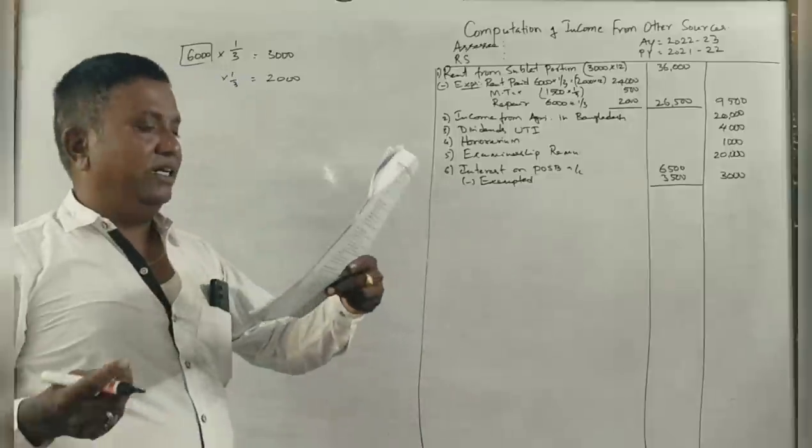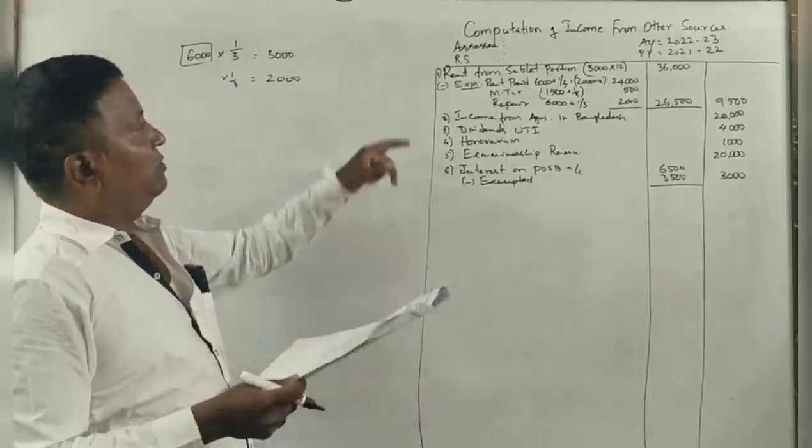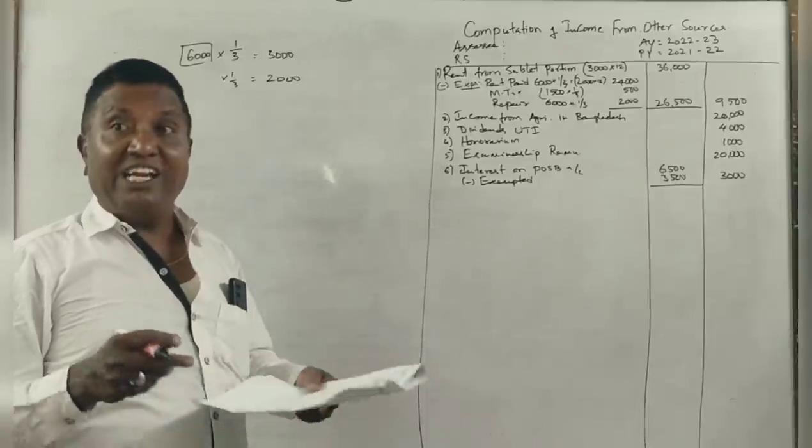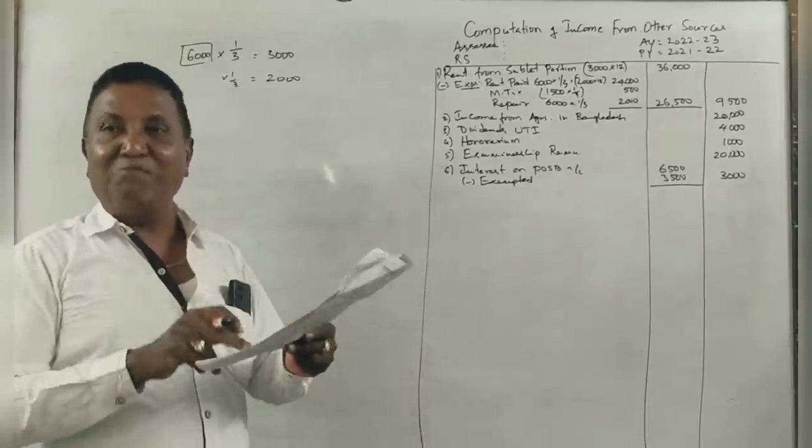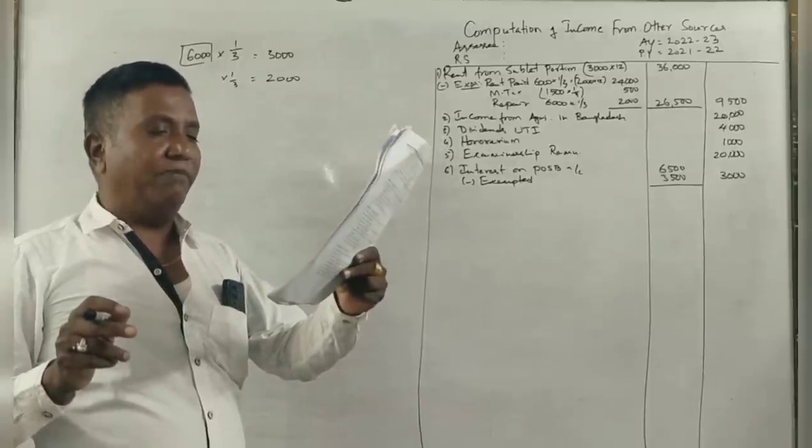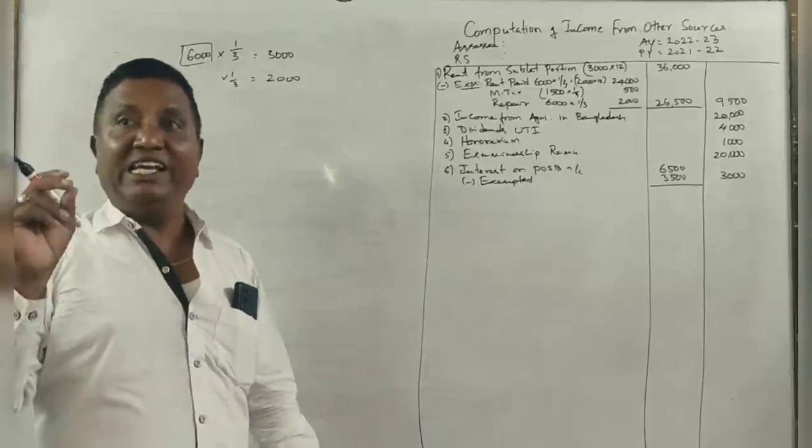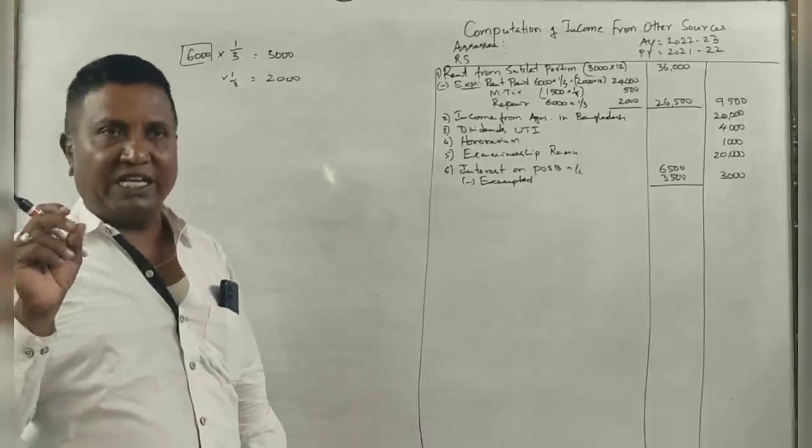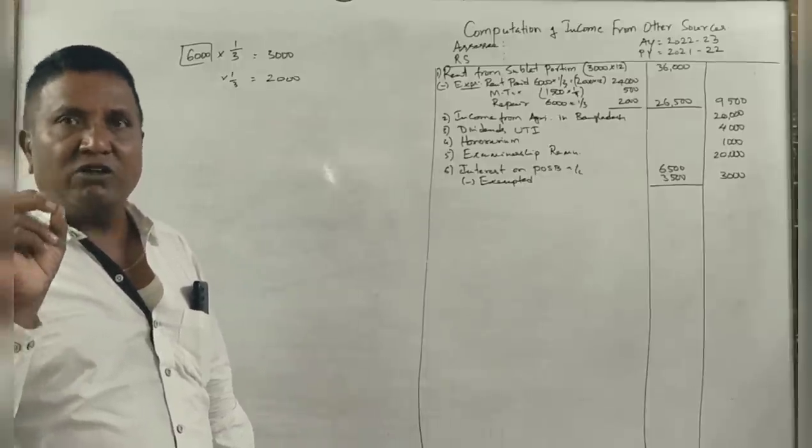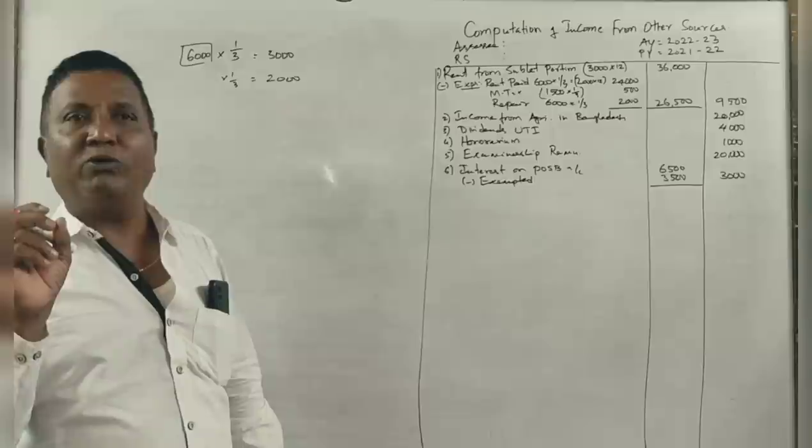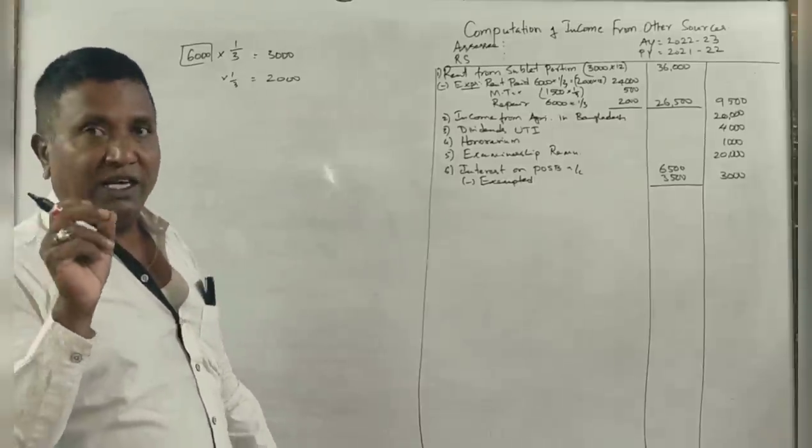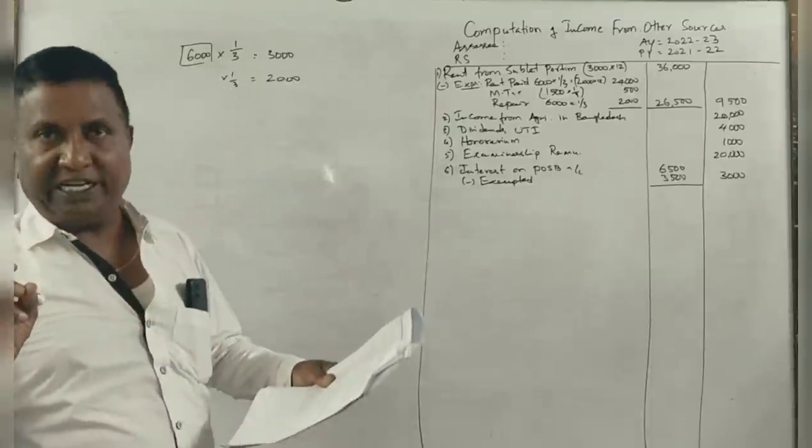He holds the following investments. This question is 15 marks total. This is important: 1 lakh rupees, 8% tax-free commercial securities of TCS company, non-government. 30,000 rupees, 7% debentures of chemical company. These are tax-free and non-government securities requiring gross-up.